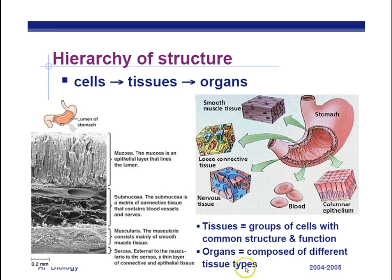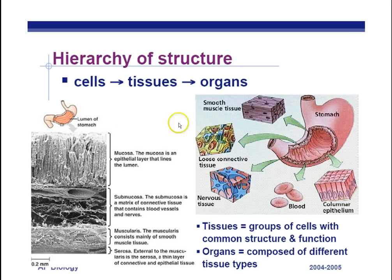A group of tissues makes up an organ. For example, the stomach is composed of smooth muscle tissue, nervous tissue — which sends signals from the brain letting you know you're hungry and makes your stomach muscles contract — as well as connective tissue like blood and epithelium tissue. All these tissues together make up the organ known as the stomach. Organs make up organ systems, and all the organ systems combined — the digestive system, circulatory system, nervous system — make up the organism.